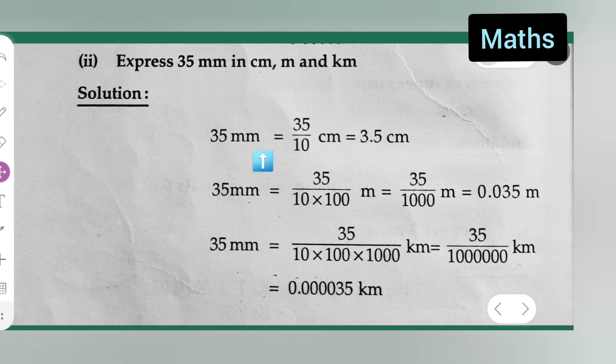35 millimeters, if I want to convert it into centimeters, 35 millimeters equals 35 divided by 10 centimeters, which equals 3.5 centimeters. Now I have to convert this millimeter into meter.